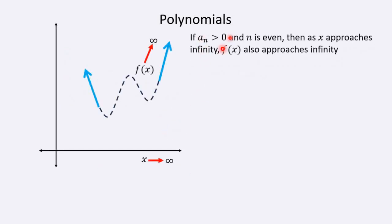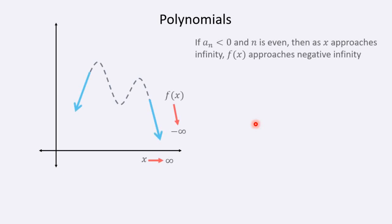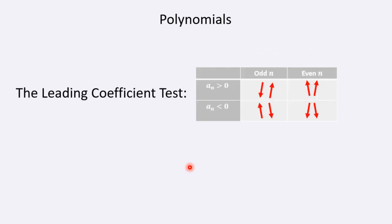The next scenario is if we have a positive leading coefficient but n is now even. In this case, as x gets really large or approaches infinity, y also approaches infinity. But as x gets really small — as x approaches negative infinity — y is actually still going to get really large; y is going to approach positive infinity. Lastly, if the leading coefficient is negative and n is even, then as x approaches infinity, y approaches negative infinity, and as x approaches negative infinity, y also approaches negative infinity.